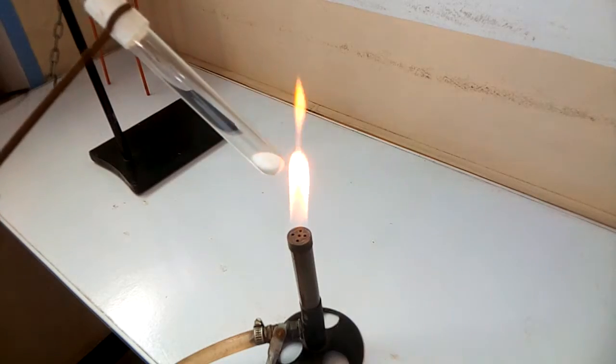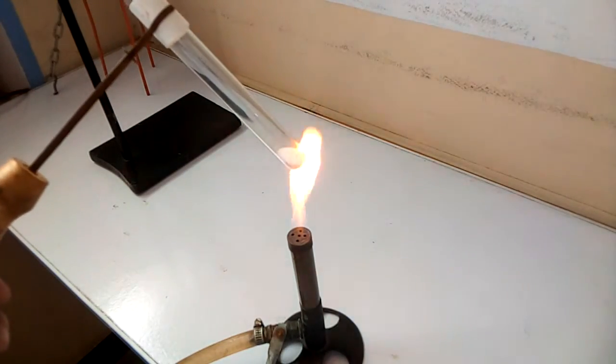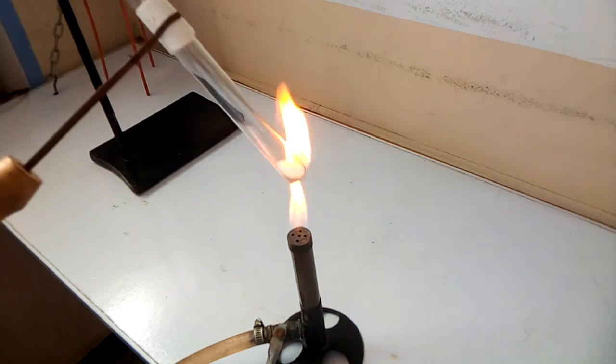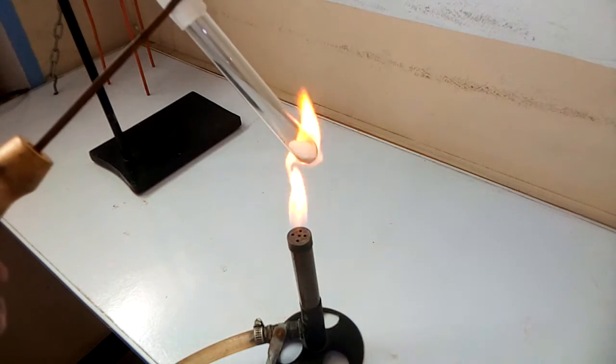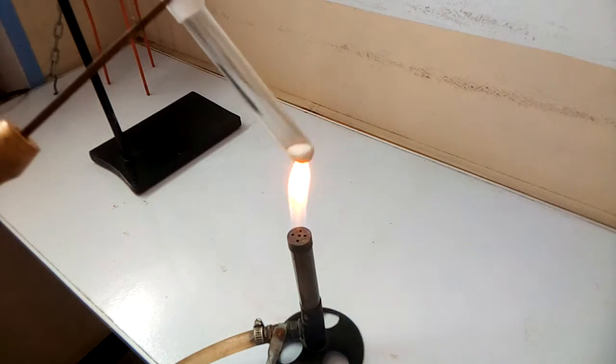We have taken 5 grams of ammonium chlorite in solid form into the test tube. Now we will heat the test tube containing solid ammonium chlorite gently over the burner with a to and fro motion like this.